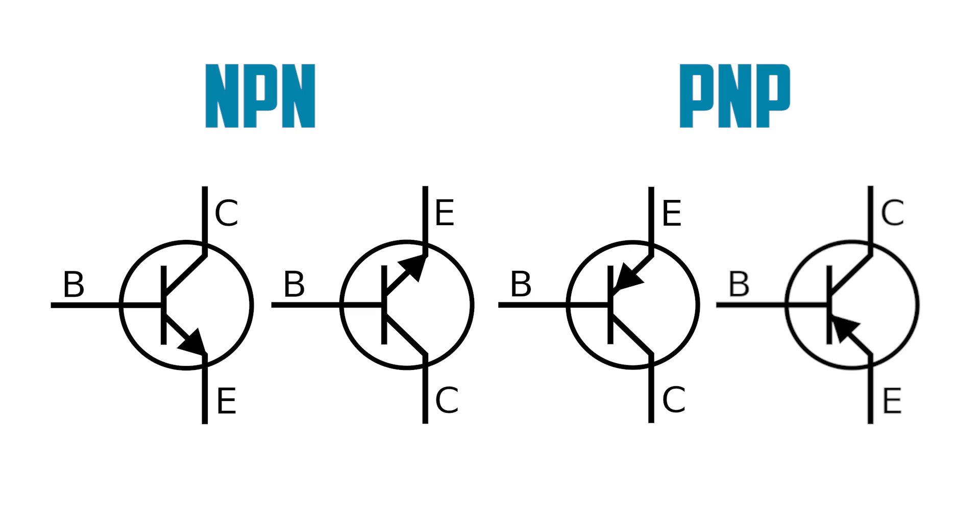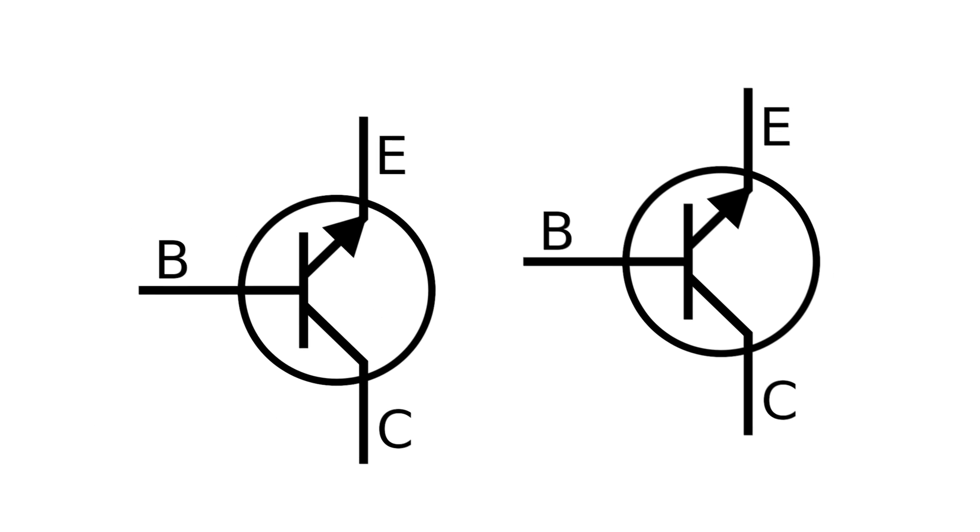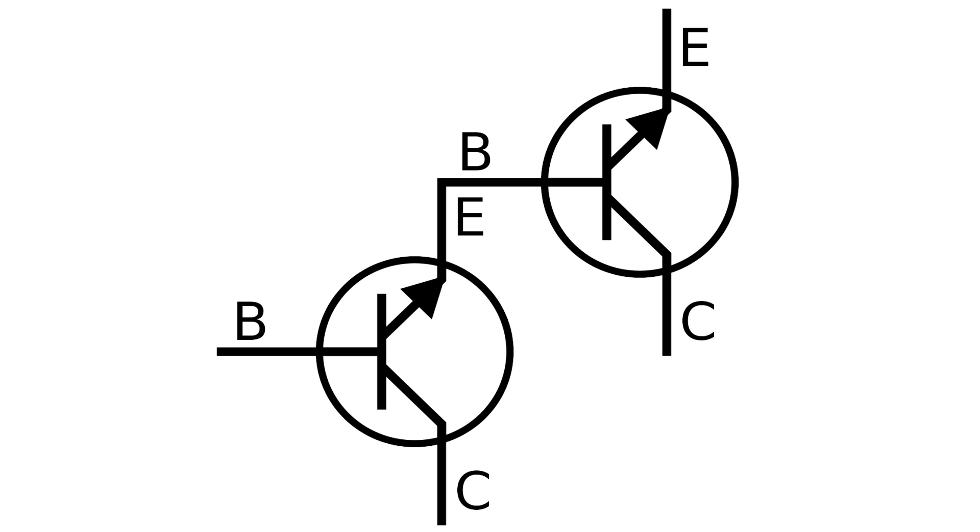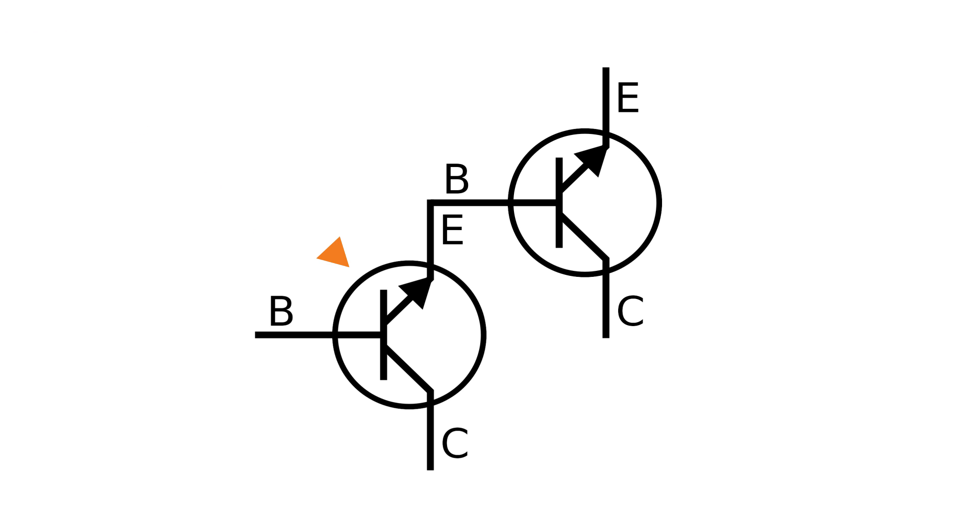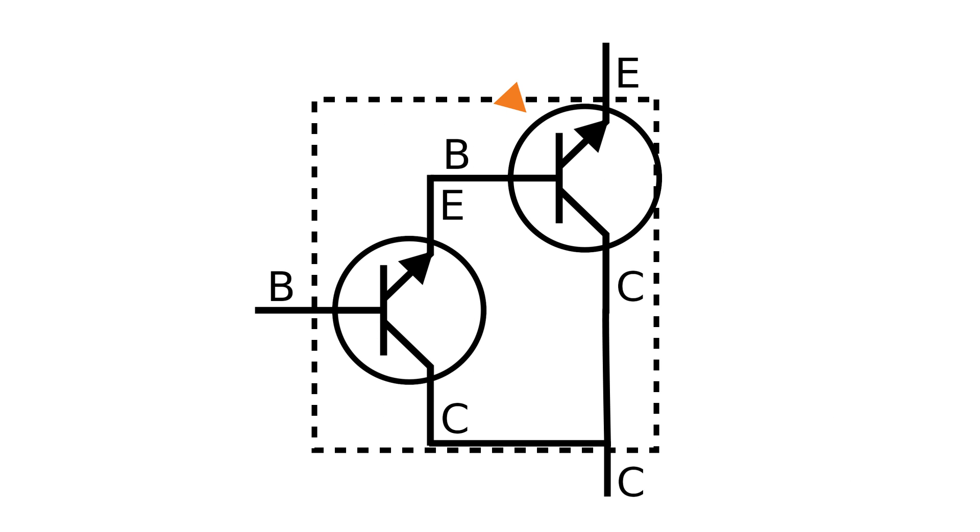Another use for transistors is amplification. One method for current amplification is by combining two transistors into a Darlington pair. This can be done with two NPN or two PNP transistors. The two transistors are combined by connecting the emitter of the first transistor to the base of the second transistor. In a Darlington pair, the current is amplified by the first transistor and then further amplified by the second. When a Darlington pair is contained in a single package, it makes a Darlington transistor.